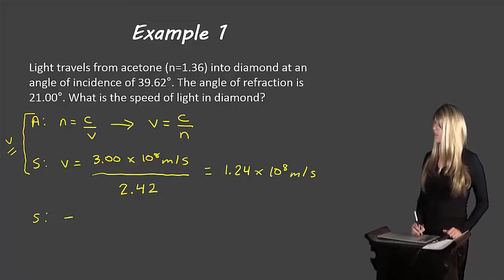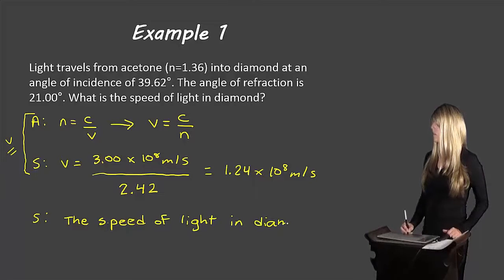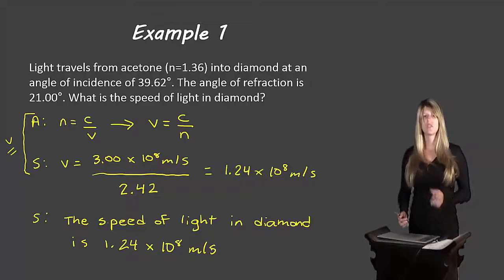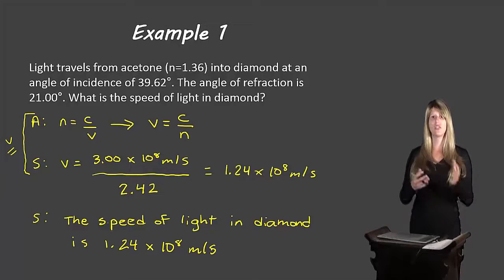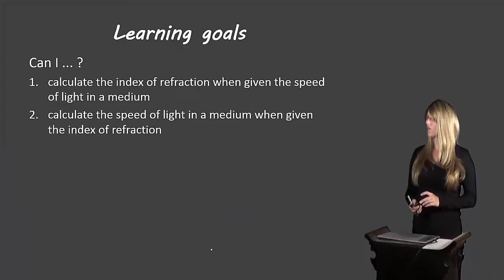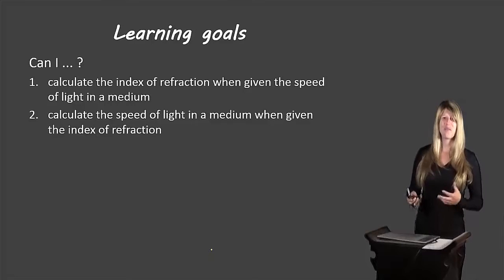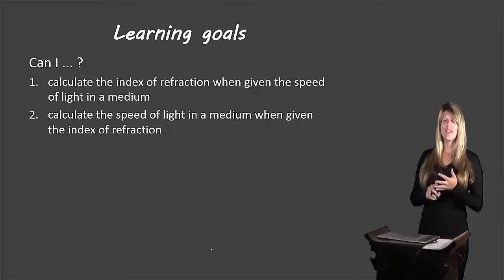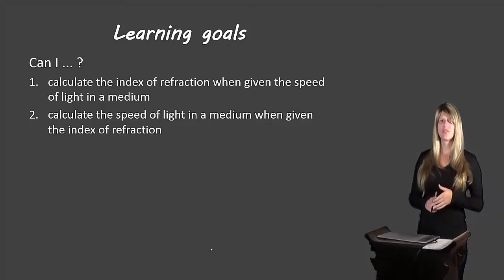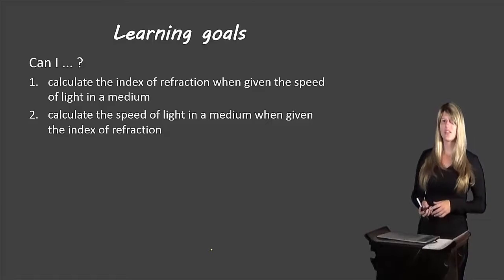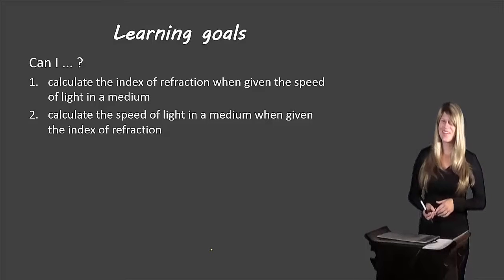The speed of light in diamond is 1.24 times 10 to the 8 meters per second. This is how we solve a problem that uses a combination of the refraction equation and Snell's Law. We want to be able to calculate the index of refraction of either medium, the speed of light in either medium, the angle of incidence, or the angle of refraction when given the other required values. If you can do this, fantastic. If not, please re-watch the video, and if you're still having trouble, come ask me in class tomorrow. Alright, that's all for now. Bye-bye.